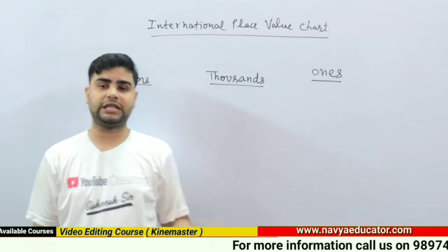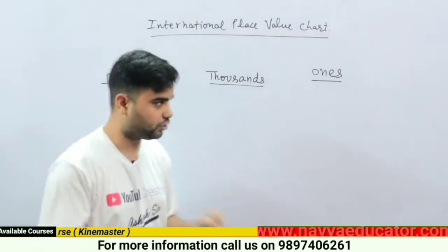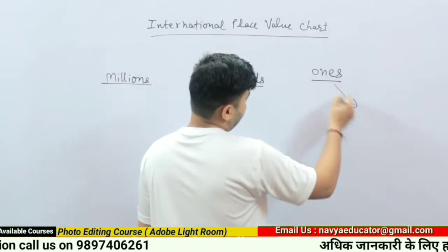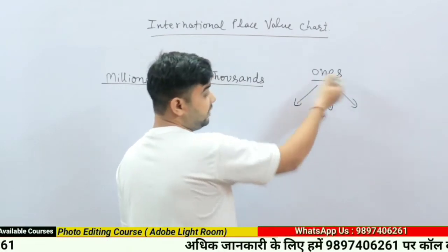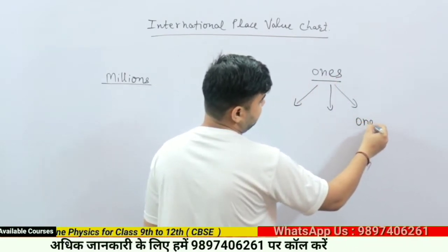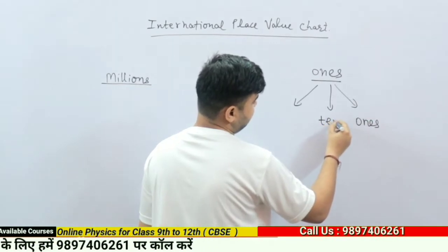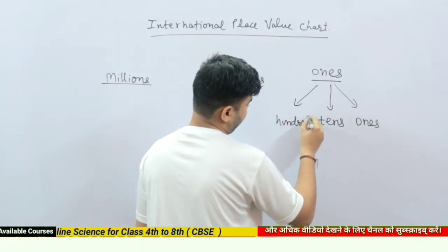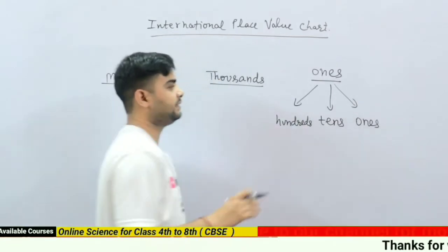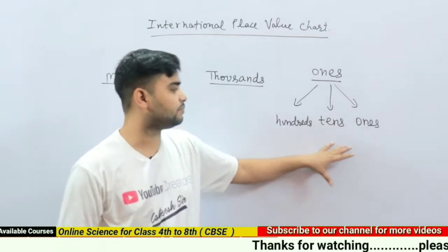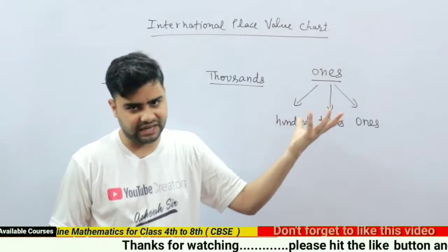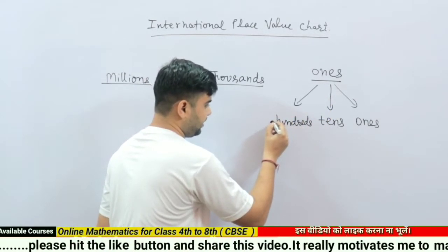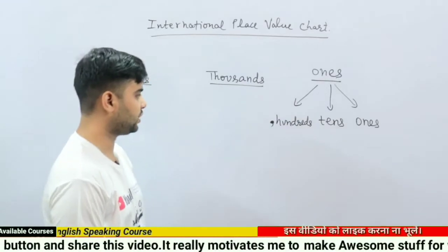If we talk about the place values within each period, it is totally different from the Indian place value chart. The place values of the ones period are ones, tens, and hundreds — and these place values were the same in the Indian place value chart. After three digits we make a comma in the international place value chart.